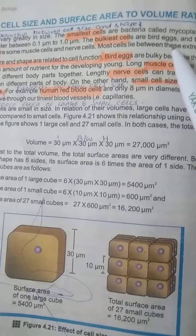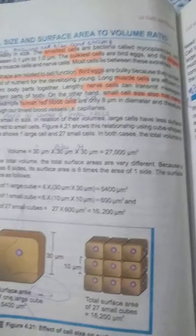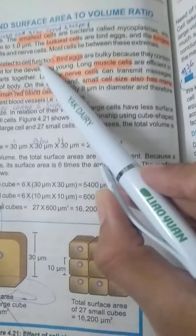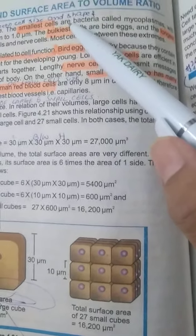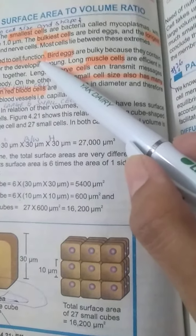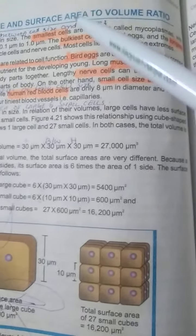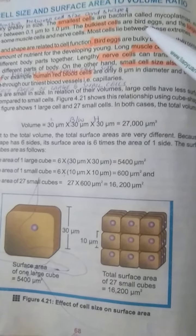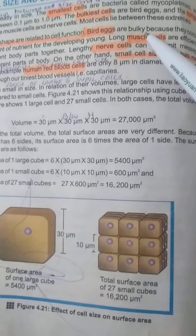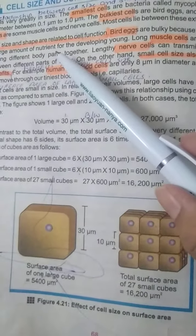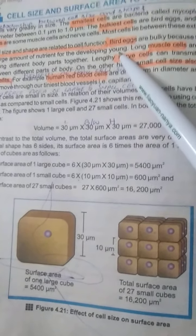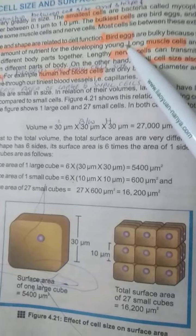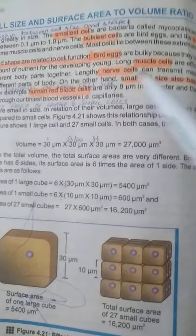Most cells lie between these extremes. Then you make a heading: cell size and shape related to function. This means the discussed cell size and shape, how they are dependent for the functioning of cell type. First of all, we have bird cells. We discussed that bird cells are bulkiest cells. They are bulkiest because they contain a large amount of nutrients for the developing young.